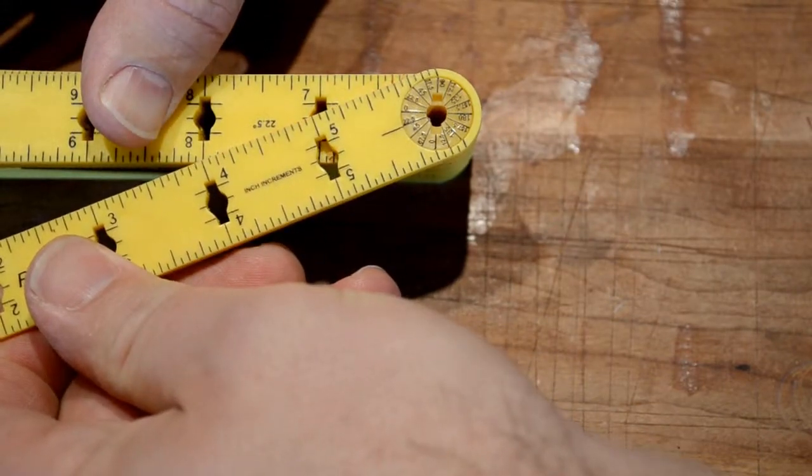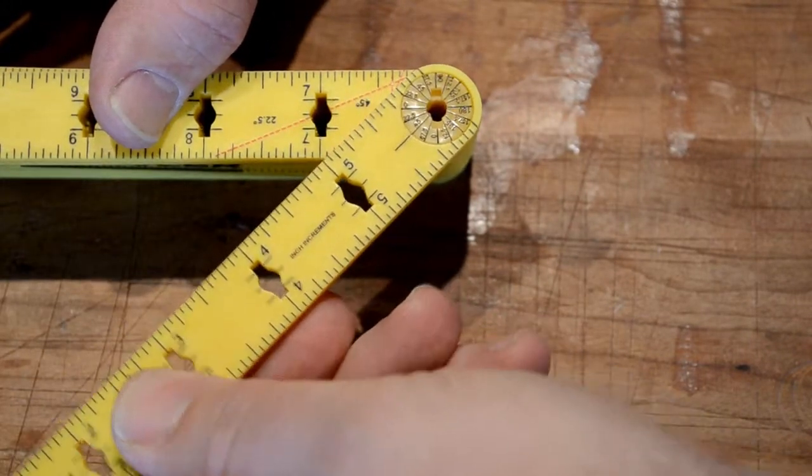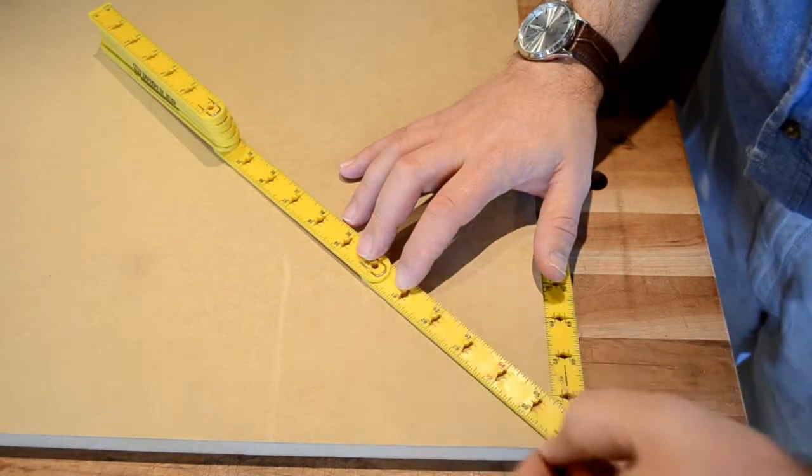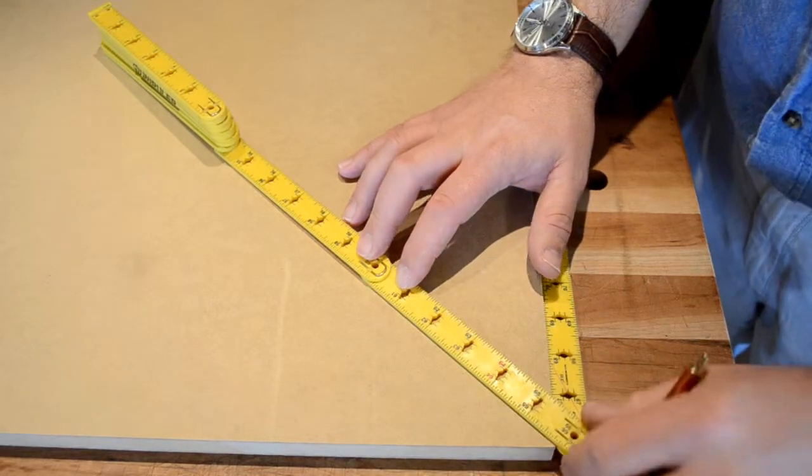And the second segment has marking lines at 22.5, 45, 67.5 and 90 degrees to allow for fast marking out of all the basic angles used in common construction tasks.